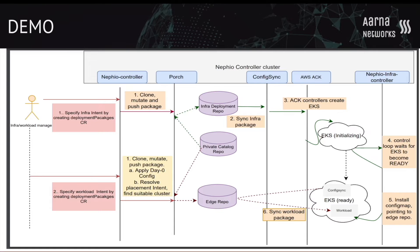Once the EKS cluster is created, we have to set it up for workload automation. For automating this step, there is the Nafio infra controller in the Nafio cluster. This controller keeps watching the state of the EKS cluster. When the EKS cluster reaches a ready state, it deploys Config Sync in the EKS cluster, fetches the target repo from the infra intent specified by the user, and configures Config Sync to sync packages from that repo. At this point, the target EKS cluster is ready to sync workload packages.